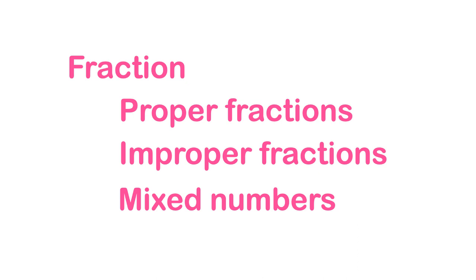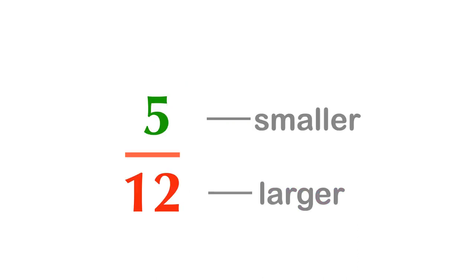There are 3 types of fractions: proper fractions, improper fractions, and mixed numbers. Proper fractions are fractions where the numerator is smaller than the denominator.